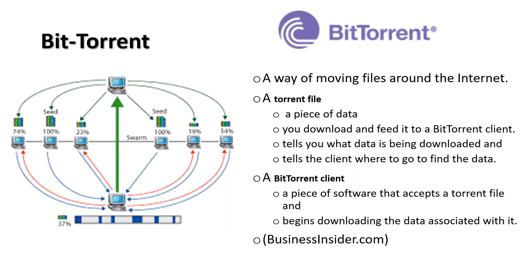Next we look at BitTorrent. Some of you may have used this. It's a very useful way of downloading movies and a way of moving files around the internet. It was developed because some files that are very large, like movies, would take a lot of space on a server, and it would also take a lot of time if everybody was accessing one server trying to download a big file. A torrent file is actually a small piece of data that belongs to a bigger file — you download that torrent file and feed it into a BitTorrent client.